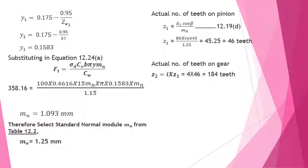In this Type 2 problem, since we already know the velocity, we can find CV directly and substitute everything into the Lewis equation without keeping CW symbolic. Since the pinion is the weaker member, we use Y1 with Ze1 = 57 (virtual teeth on pinion), giving Y1 = 0.1583. Substituting all values gives mn = 1.03 mm.